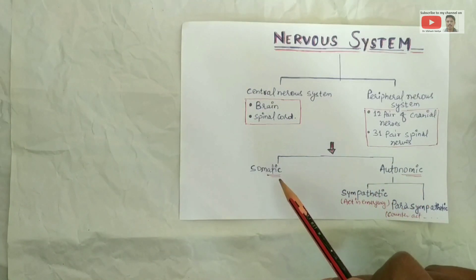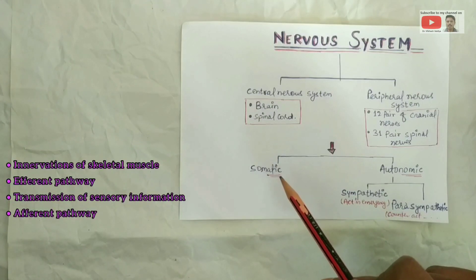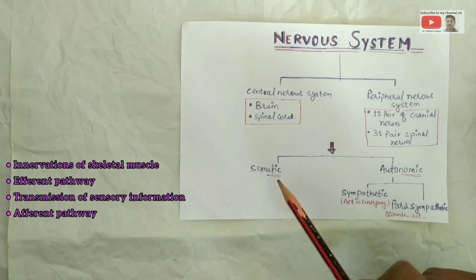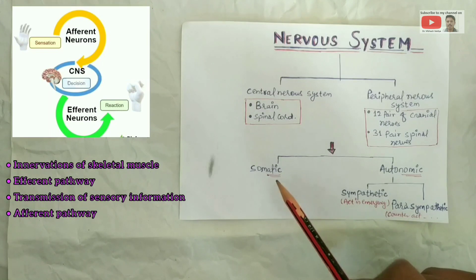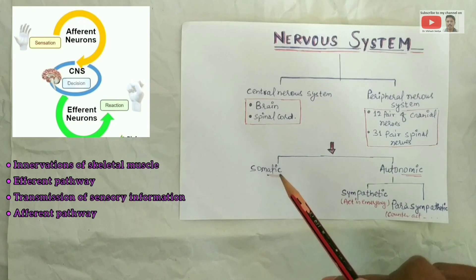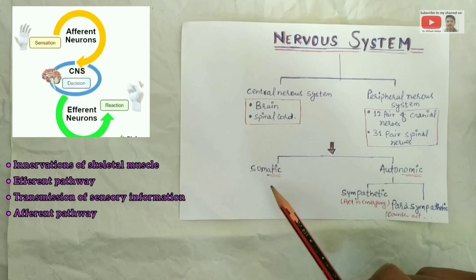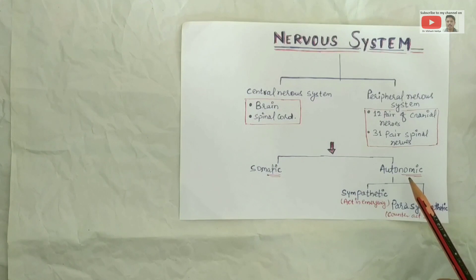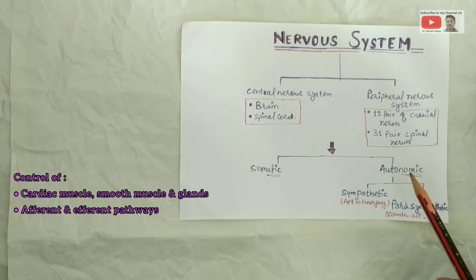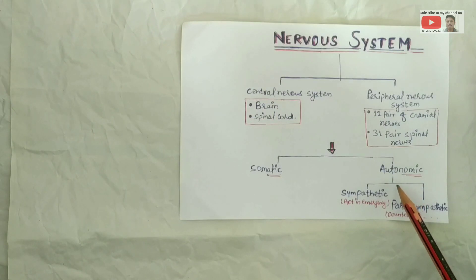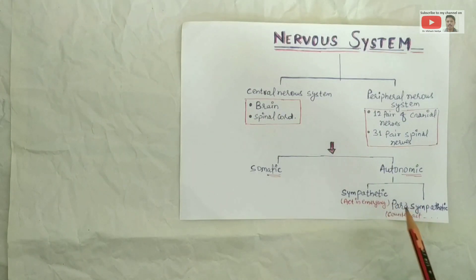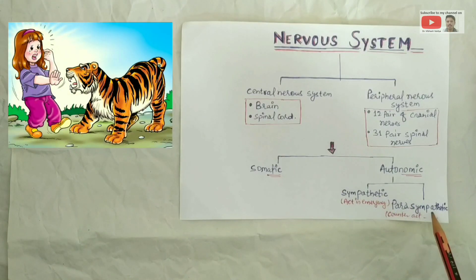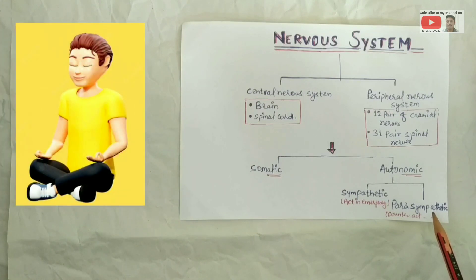Somatic is concerned with the innervation of skeletal muscles via the efferent pathway — meaning from the Central Nervous System to the Peripheral Nervous System — and also the transmission of sensory information along the afferent pathway, meaning from periphery to center. The Autonomic Nervous System is mainly concerned with control of cardiac muscle, smooth muscle, and glands, involving afferent and efferent pathways. It is further divided into Sympathetic, activated during emergency, and Parasympathetic, which mainly counteracts sympathetic activity.